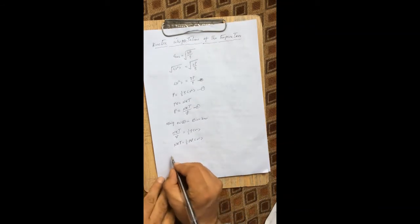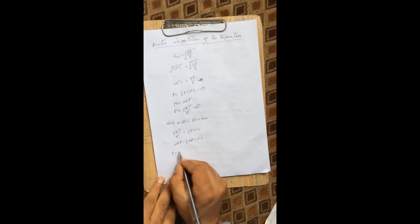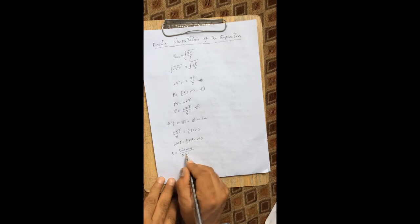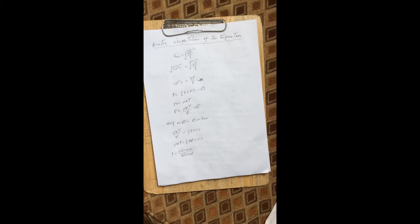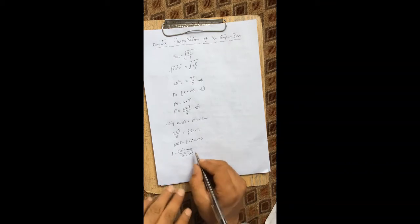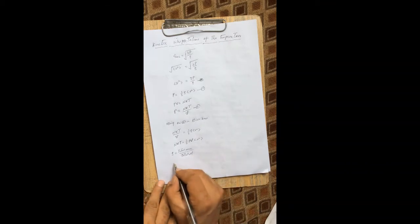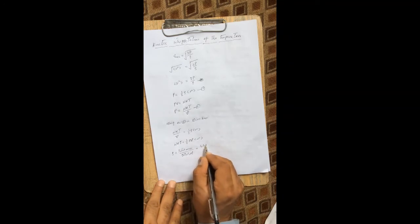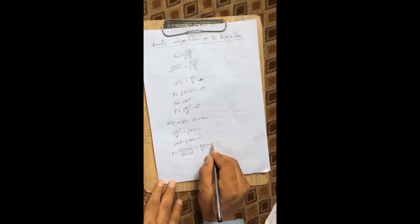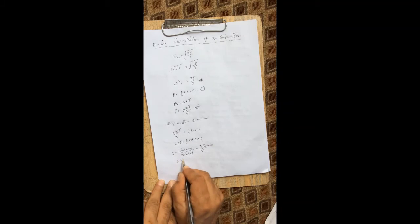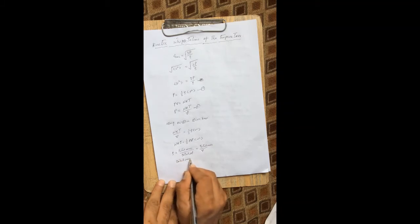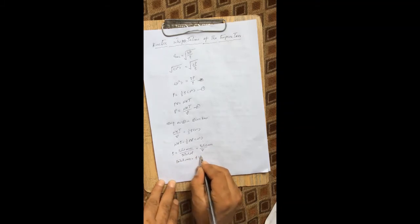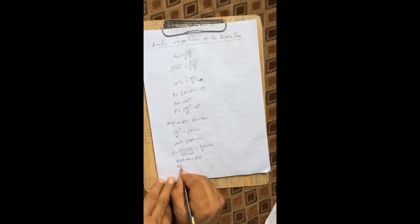Now we know that density rho is equal to total mass divided by total volume. From this, total mass equals rho times V, where V is the total volume. I'll call this equation three.